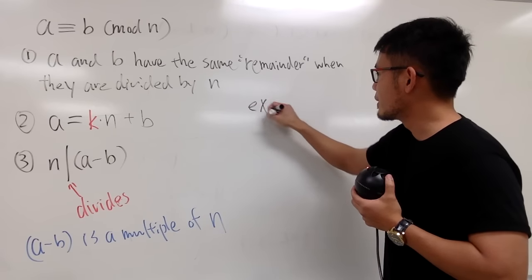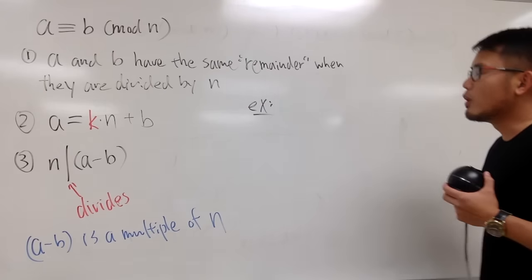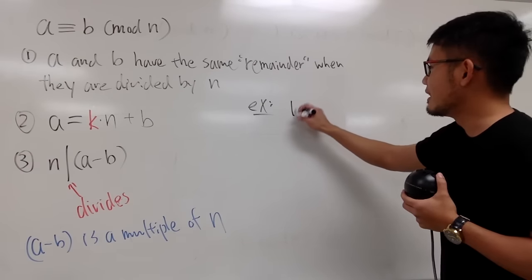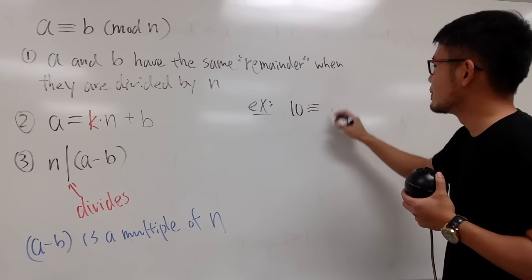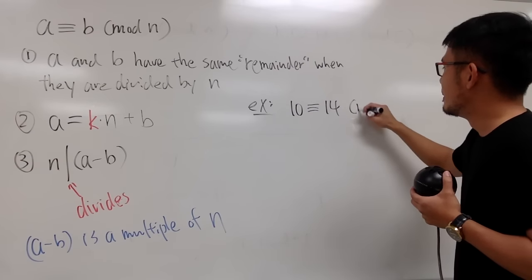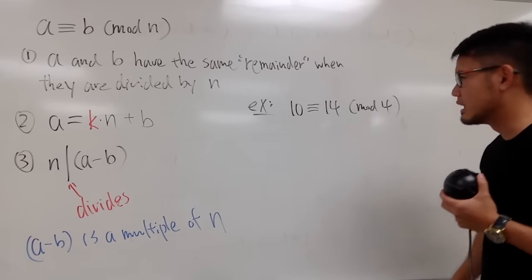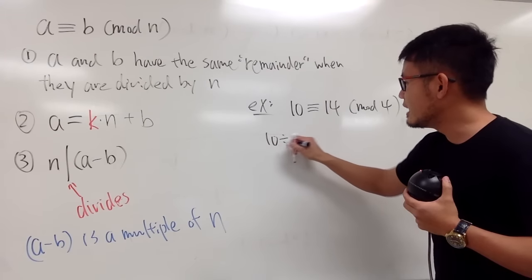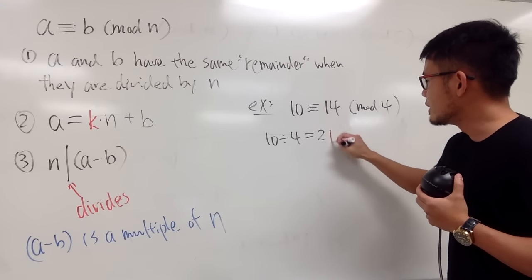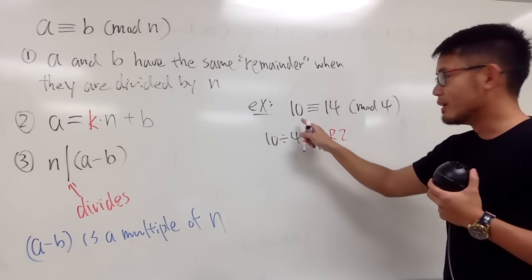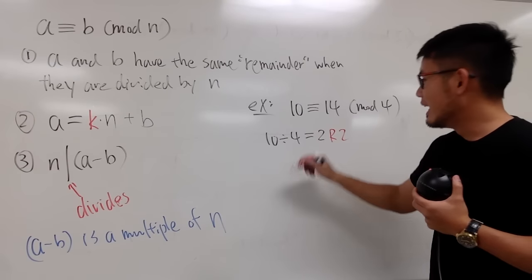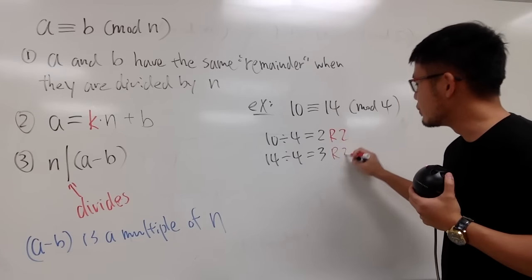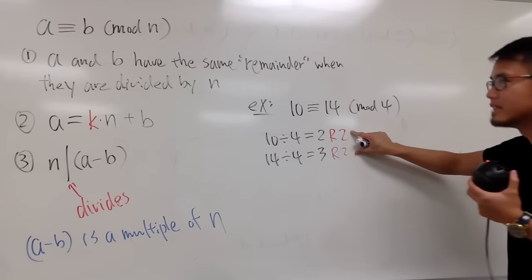Okay, so this is just a quick example. So let's do an easy one, I would say. Let's say we have 10, and that's congruent to 14 mod 4. Is it? Yes, it is! Why? Because when you have 10 divided by 4, this right here gives you 2 with remainder 2, so this right here is pretty much 2. And then right here, when you do 14 divided by 4, you get 3 with remainder 2 as well. So they have the same remainder.